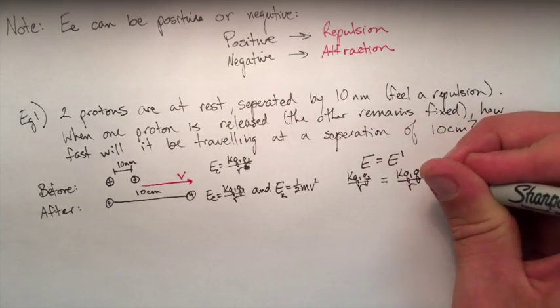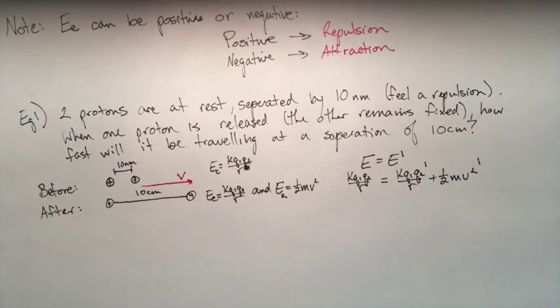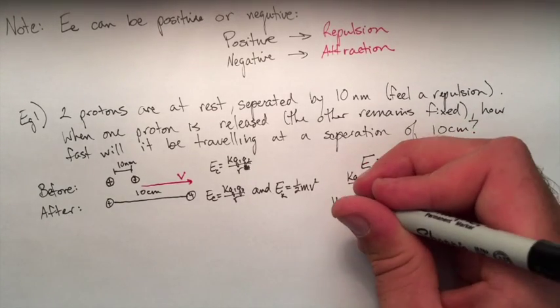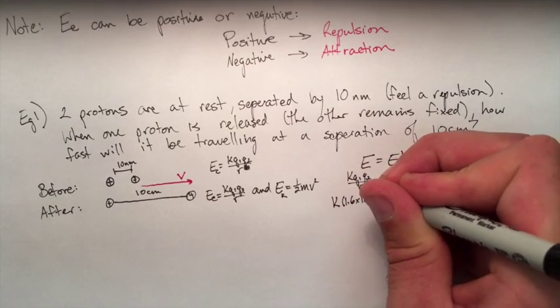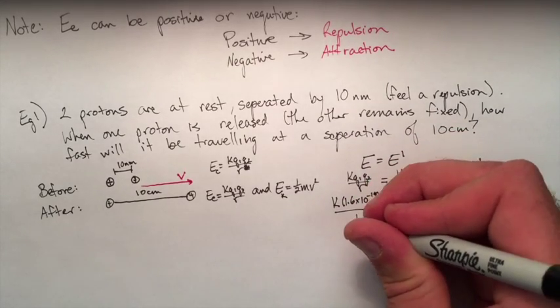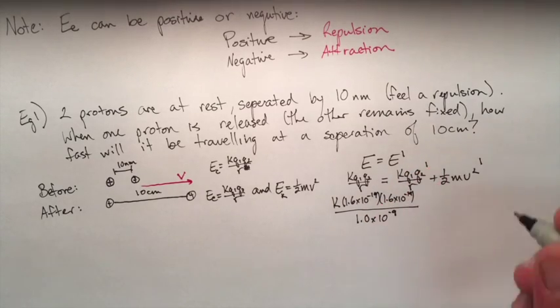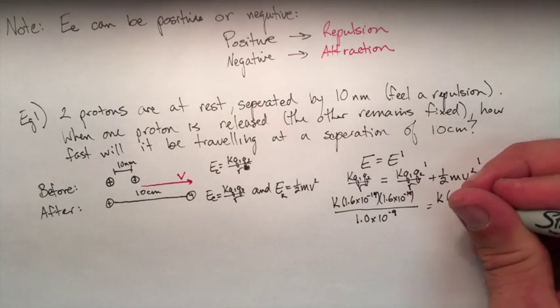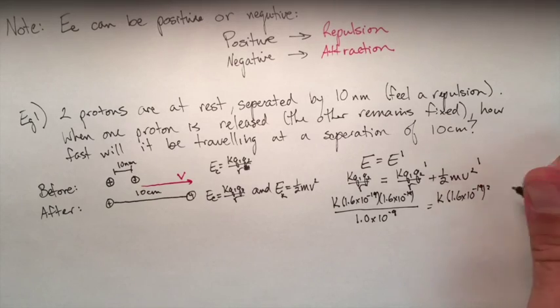Let's do conservation of energy here. Energy before equals energy finally. When we put in our numbers, k q q over r for the beforehand. Now we do need to put 10 nanometers at the bottom. There's a typo there. It should be 10 times 10 to the negative 9.